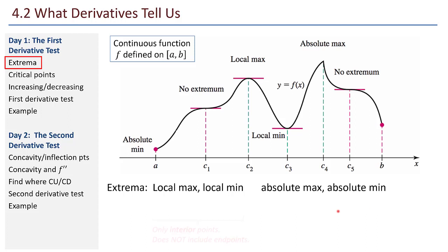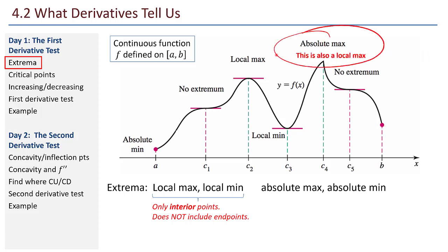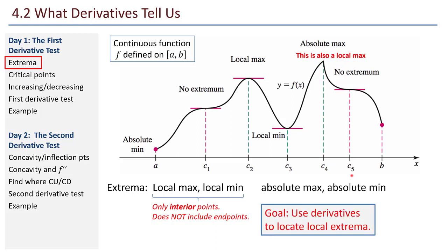Just a word of caution: local max and local min are only the interior points — they do not include endpoints. So the endpoint on the left is an absolute min, but it is not a local min. And the point on the right, we might be tempted to call it a local min, but it's not. Local mins are only interior points; the x values have to be defined to the left and the right. This is an absolute max because it's the very highest point in the whole picture, but it's also a local max because it's interior. Our goal is to use derivatives to locate local extrema.